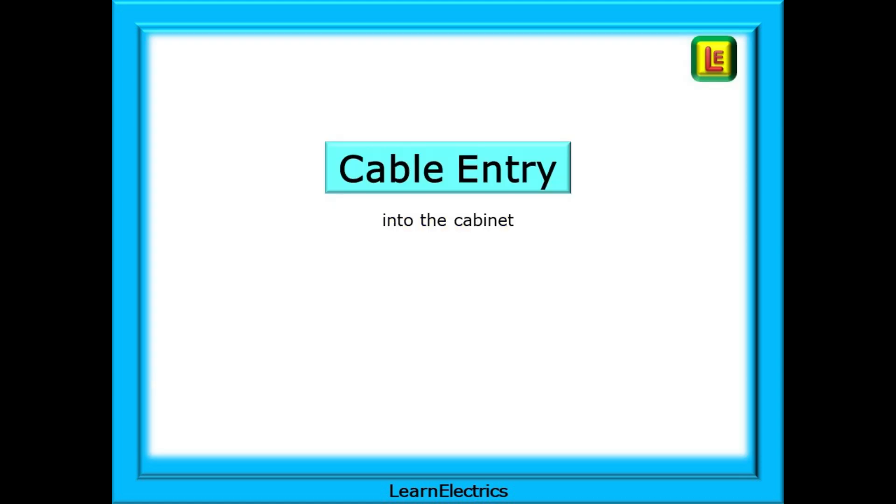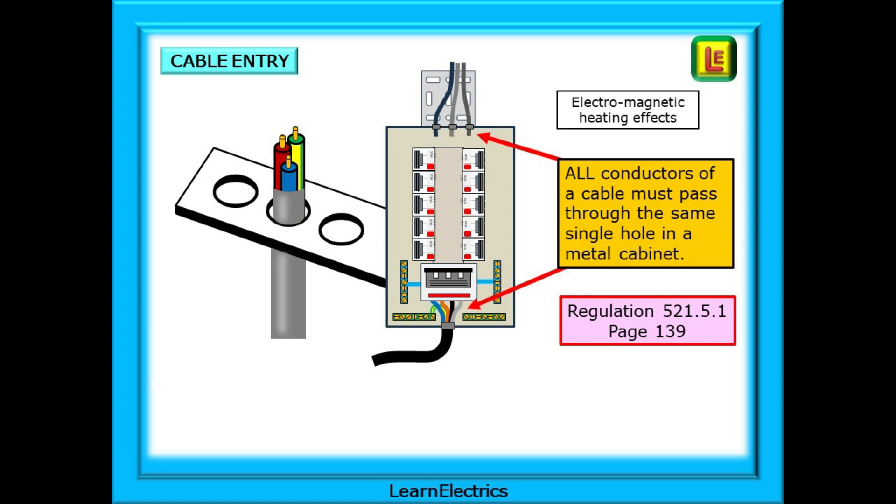And the wiring regulations have cable entry rules to any metal distribution board or consumer unit. All conductors of a cable must pass through the same hole in a metal cabinet. That is to say, L1, L2, L3, neutral, and the Earth or CPC. This is to eliminate any electromagnetic heating effects caused by the current flowing in the cables. If all the conductors of a cable pass through the same hole, then the inductive current will cancel each other out. This is regulation 521.5.1 on page 139 of the Brown Amendment 2 wiring regulations book.